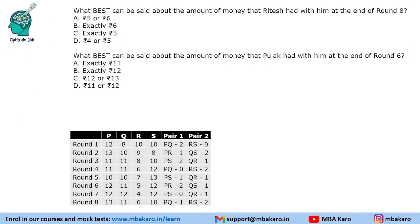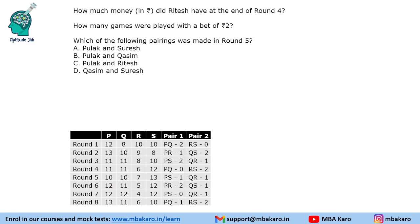Now let us see the questions. At the end of round 8, Ritesh had 6 rupees. At the end of round 4, Ritesh also had 6 rupees. At the end of round 6, Ritesh had 12 rupees. How many games were played with a bet of 2 rupees? Counting: 1, 2, 3, 4, 5, 6 — there are 6 such games. Which pairing was made in round 5? In round 5 we had P-S and Q-R, so Pulak and Suresh were a pair in round 5.